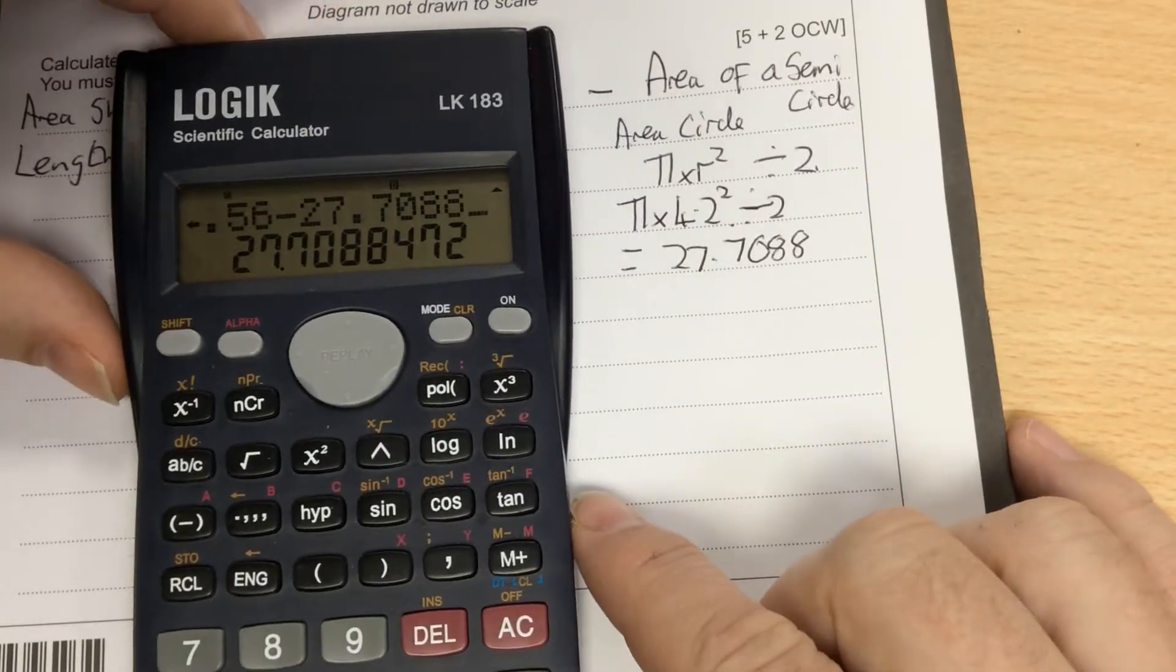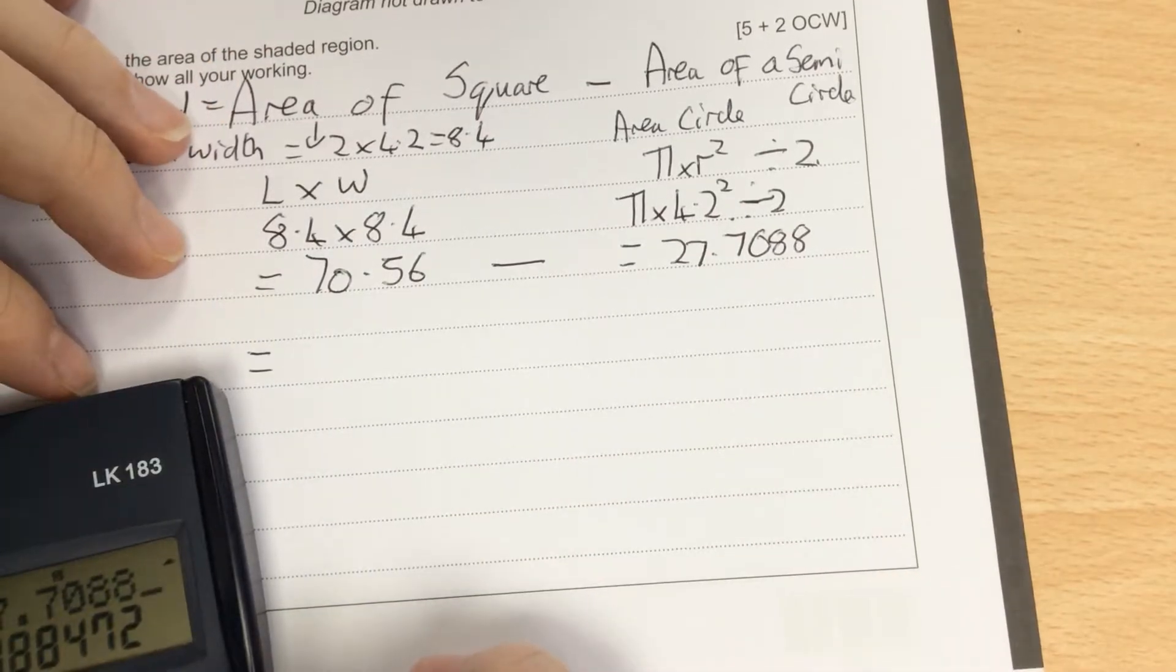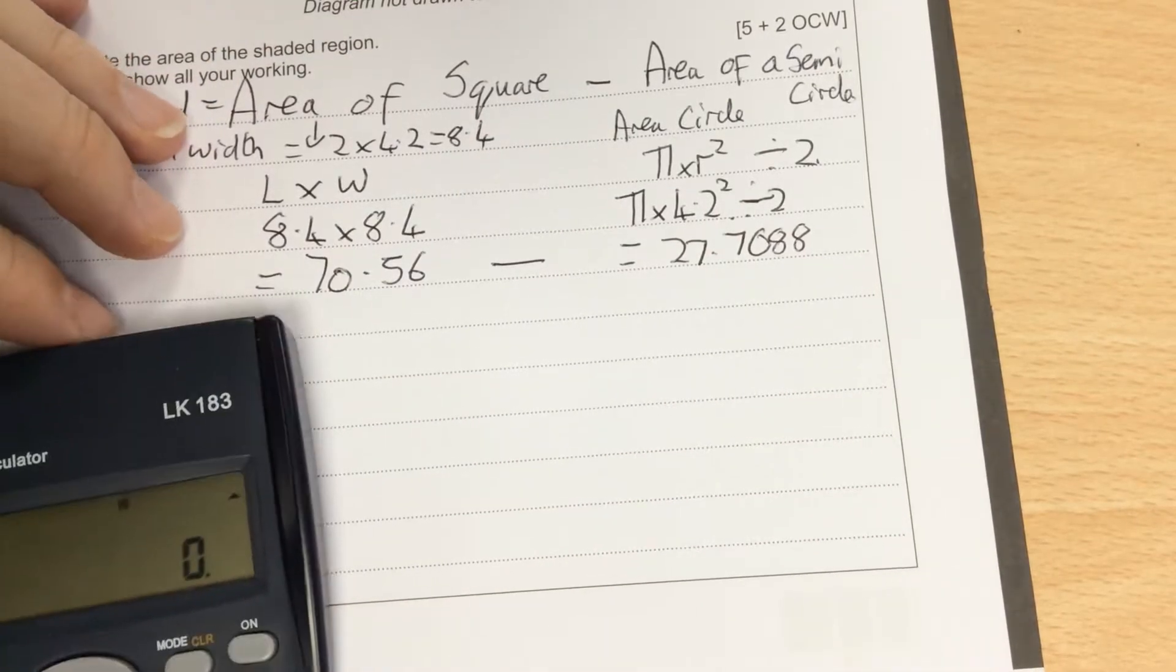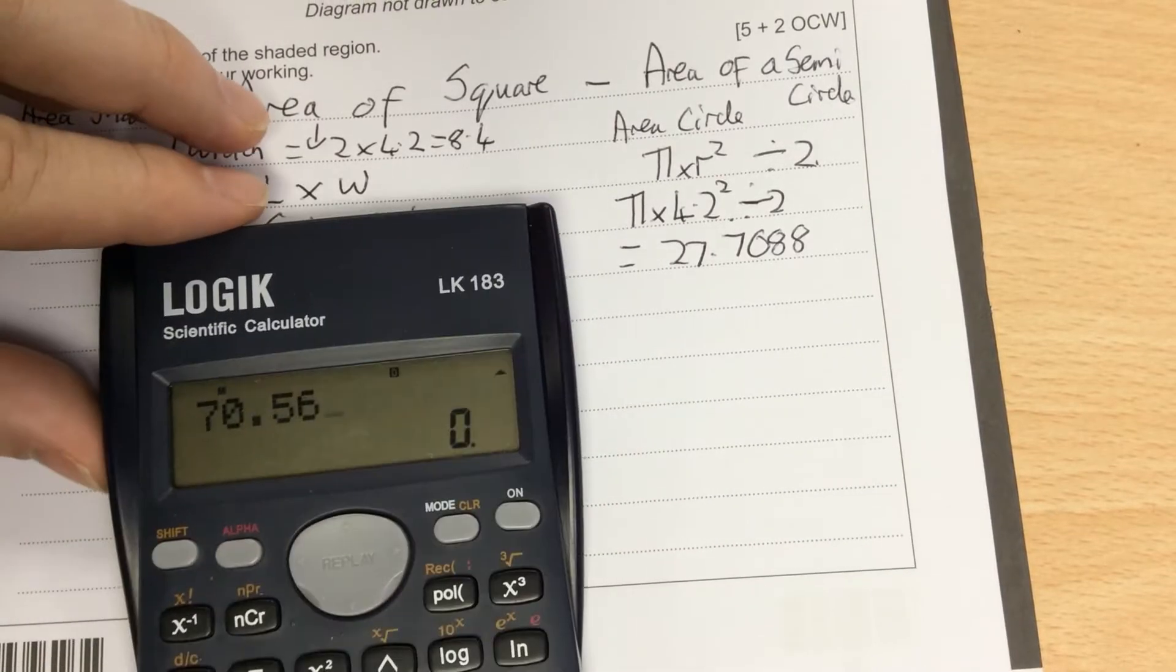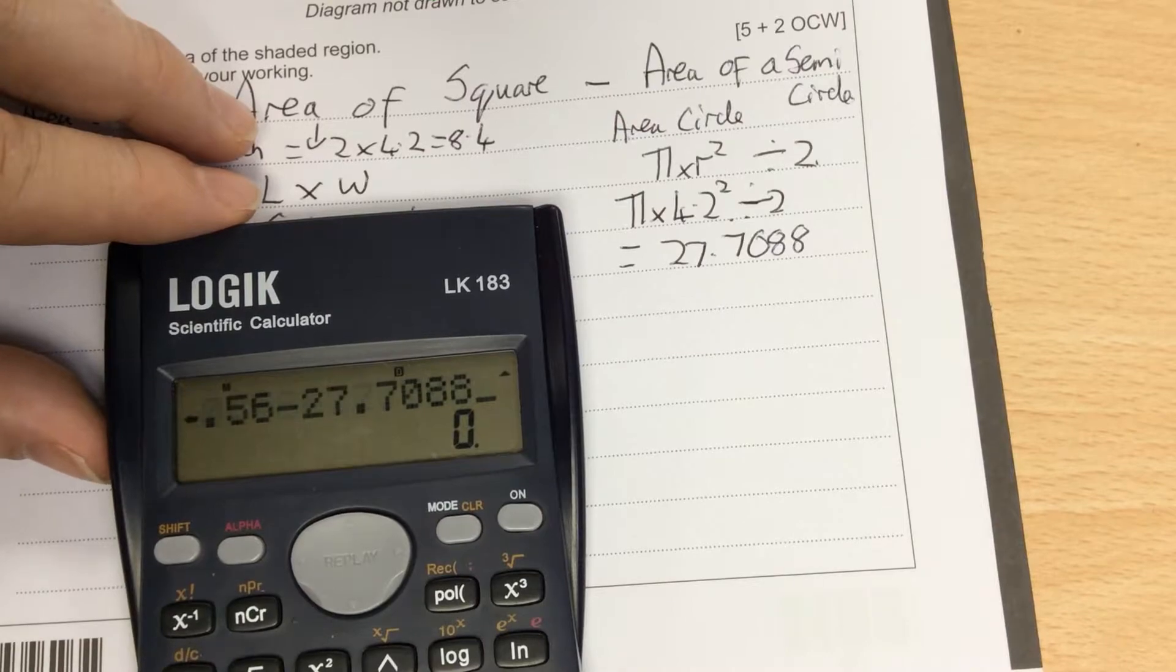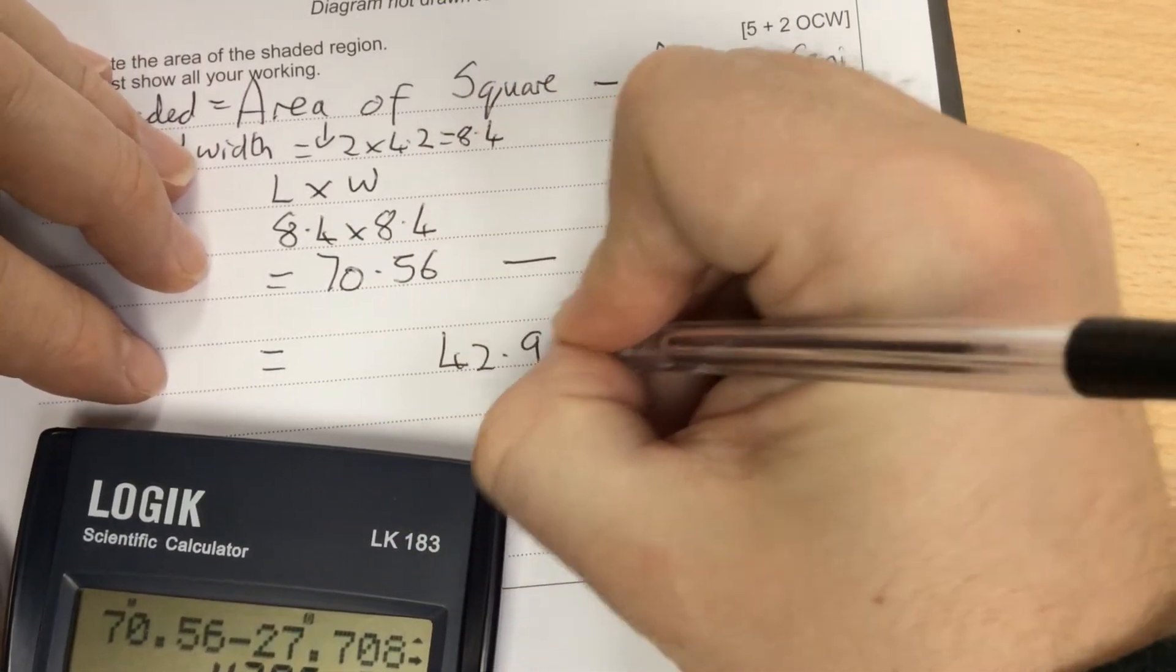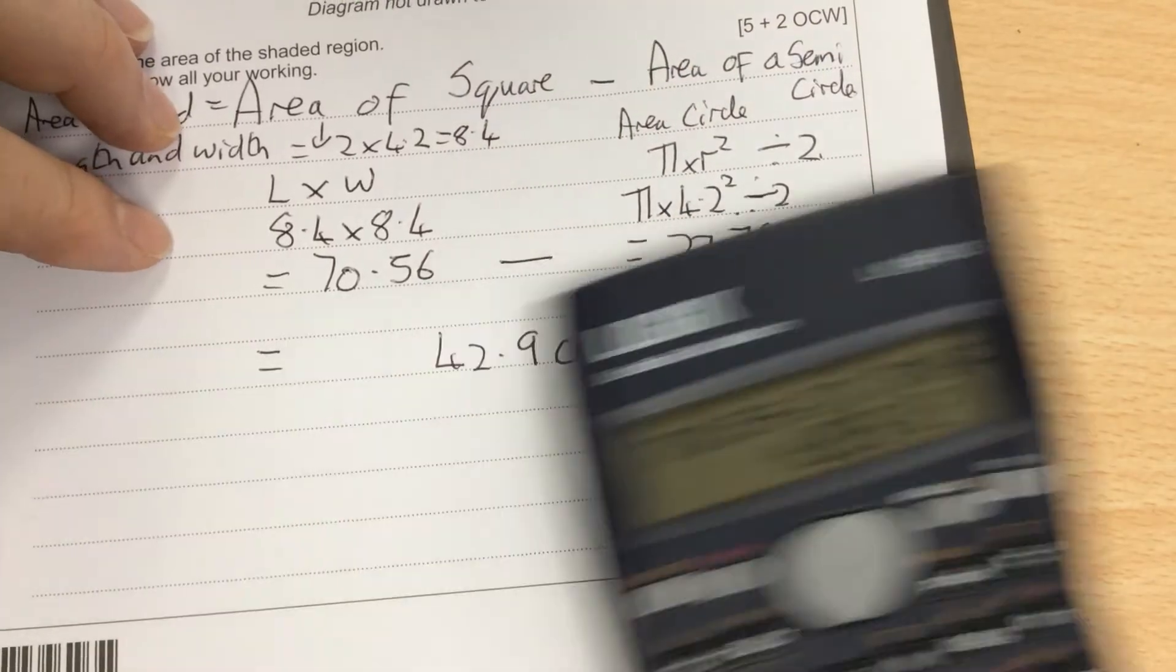And the answer to that is - check that again - 70.56 take away 27.7088. The area is 42.9 centimeters squared.